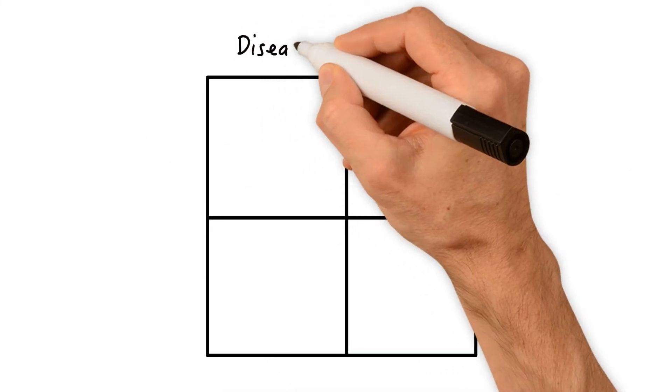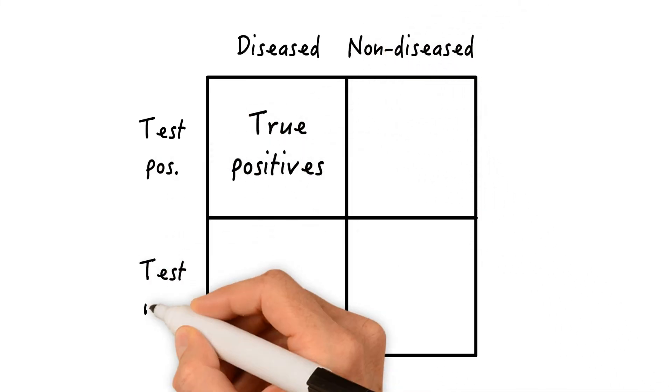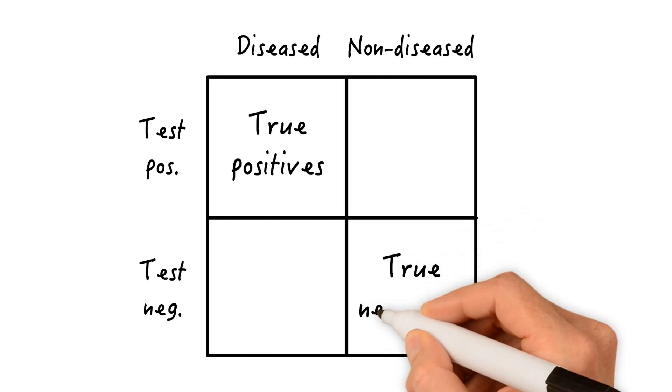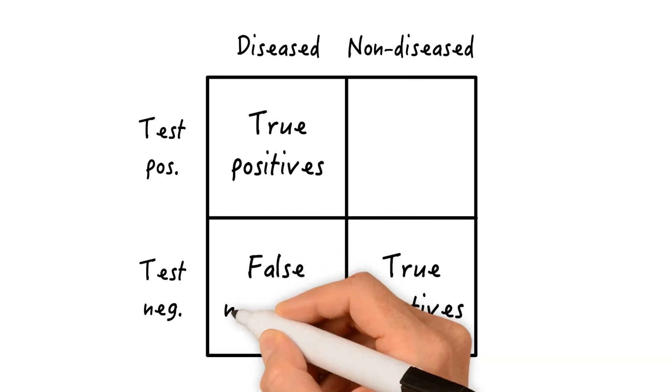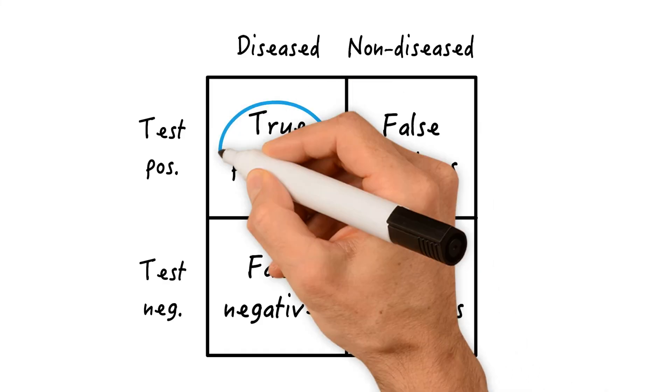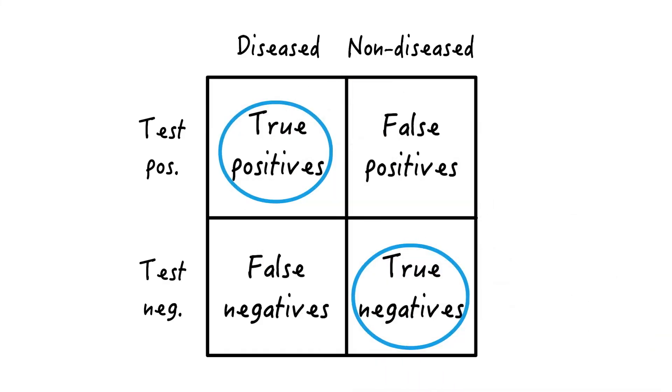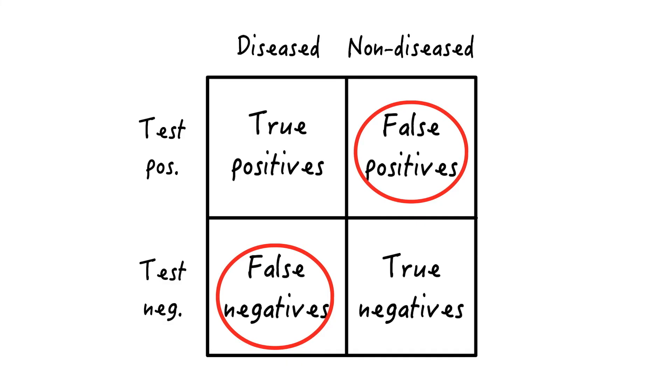So diseased individuals who are tested positive are called true positives, and non-diseased individuals who are tested negative are called true negatives. Whereas diseased who are tested negative are called false negatives, and non-diseased who are tested positive are called false positives. Ideally, we would like everyone to fall into the true positive or true negative groups. But no test is perfect, so we'll end up with people in the false negative and false positive groups.